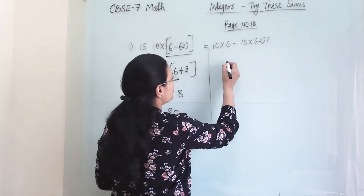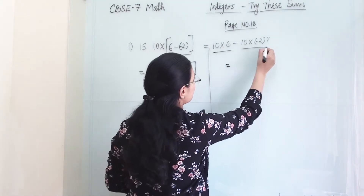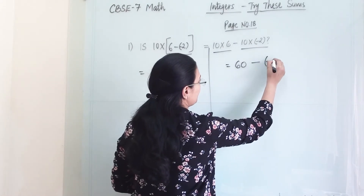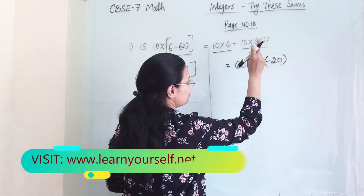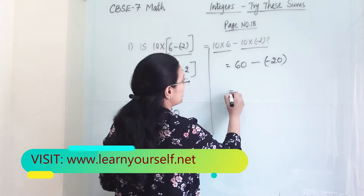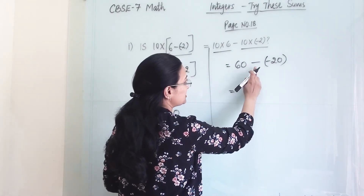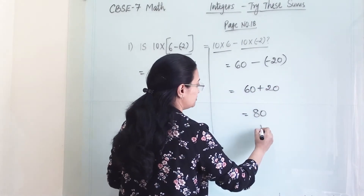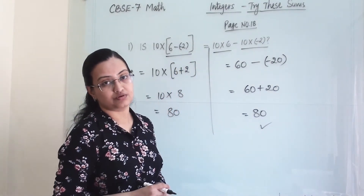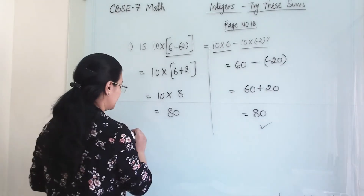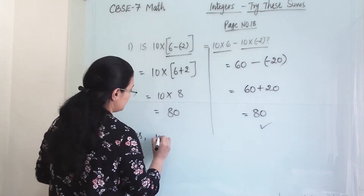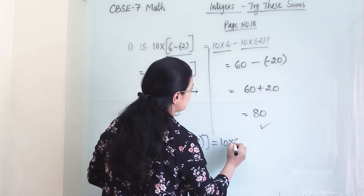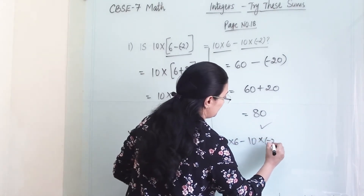On the right side, solving the two parts first, we get 60. From the next part we get minus 20, because 10 into minus 2 gives a minus answer. Then minus minus becomes plus here, so 60 plus 20 gives us 80. So this is true for these numbers. We write the concluding statement: yes, 10 into bracket 6 minus minus 2 is equal to 10 into 6 minus 10 into minus 2.